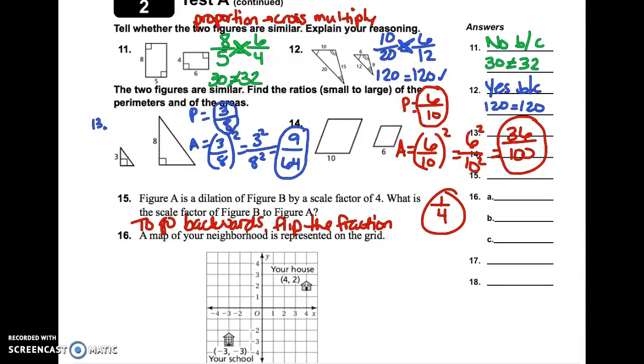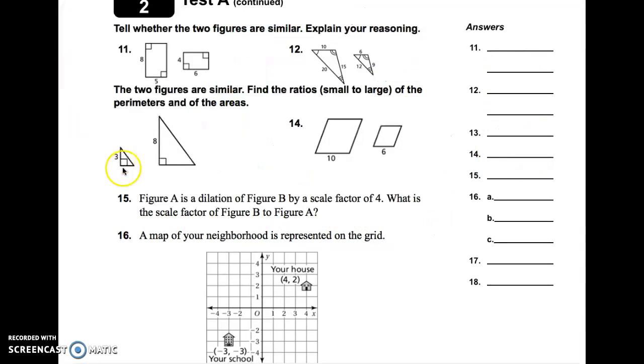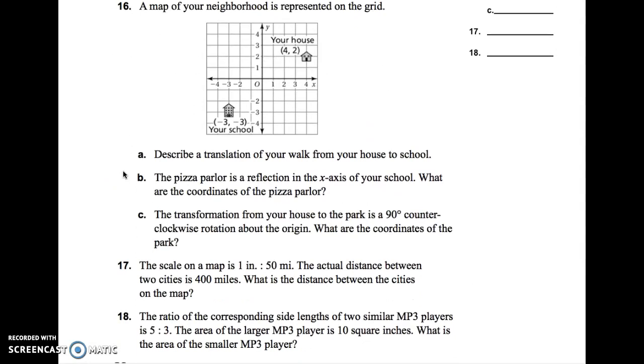Moving on to number 16. We have a map of your neighborhood represented on this coordinate plane. So, part A says, describe a translation of your walk from your house to school. So, we are starting at your house, and we are transitioning and going down to the school. They want to know the translation, basically directions, how would you get there. So, if we go diagonally, we haven't learned yet how to find the distance of that diagonal. So, they just simply want to know north, south, east, west. But, you can just use up, down, left, right. So, if I start at my house, and you can either go down first or left, doesn't matter. So, I would go down,